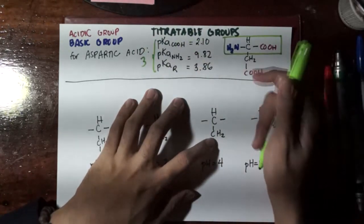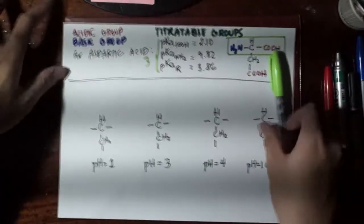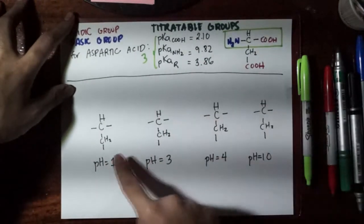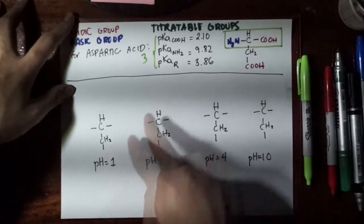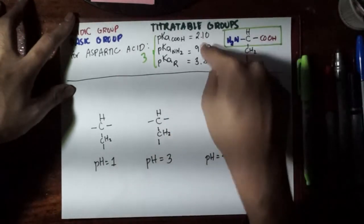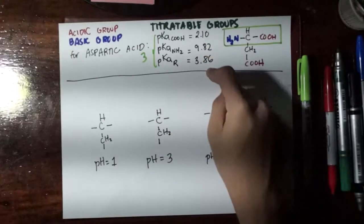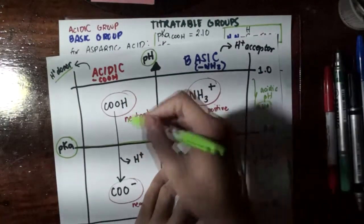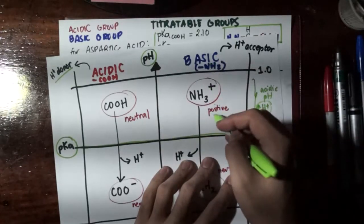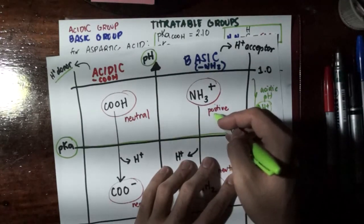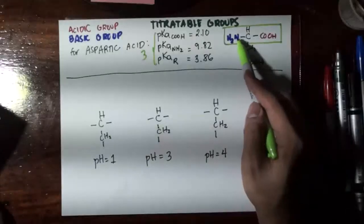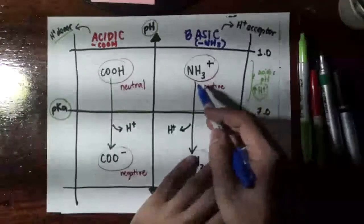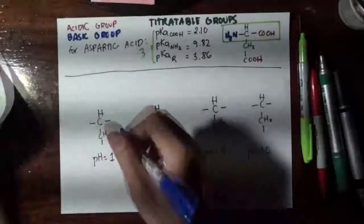The structure of aspartic acid has the constant portion shared by all 20 amino acids, plus one additional acidic functional group in its R group. So in total, aspartic acid has one basic titratable group and two acidic titratable groups, giving us a total of three pKa values. At pH 1, the pH does not exceed any of these pKa values, so all acidic functional groups remain neutral and the basic functional group becomes positive — meaning the amino group becomes NH3+.